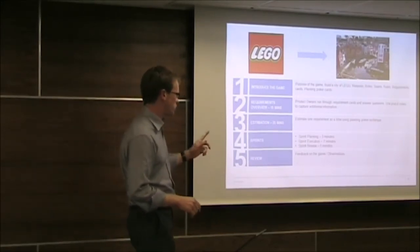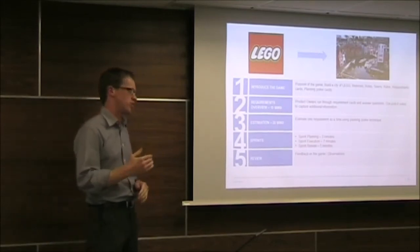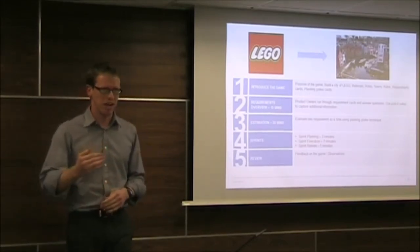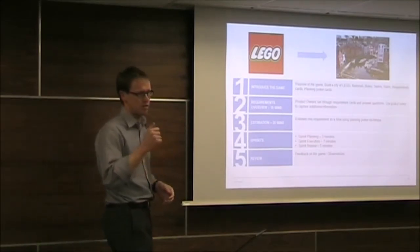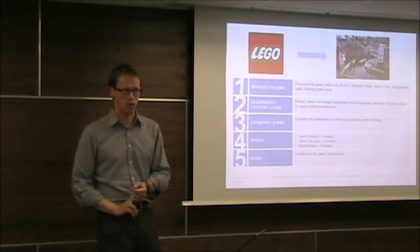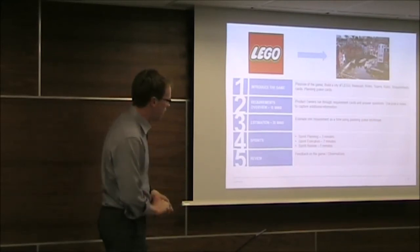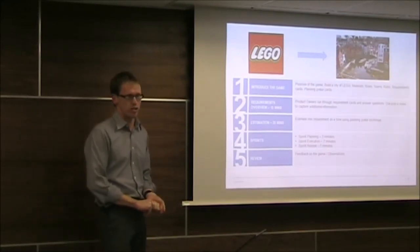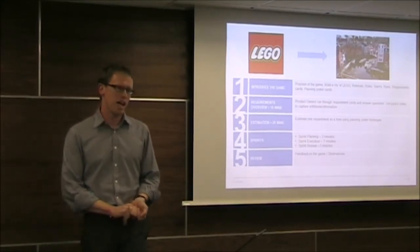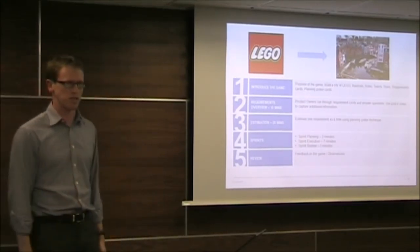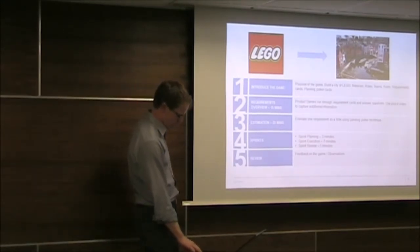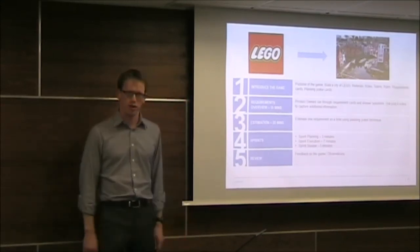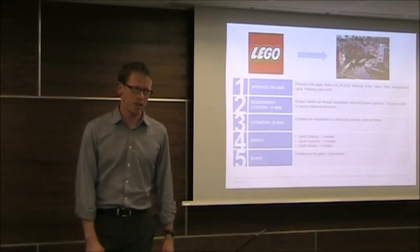We'll then move into the sprints. The sprints are run in three phases, sprint planning, sprint execution, and sprint review. So we have three minutes for planning, seven minutes for the execution, and five minutes for the review. And we're going to be running three sprints, so you're going to do that three times. And the idea is to build as much of the city as you can. And I think that probably takes care of most things. Are there any questions on the LEGO game in particular and what we're going to be doing?